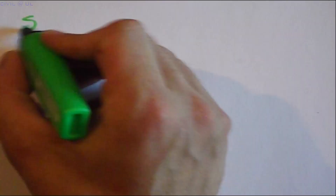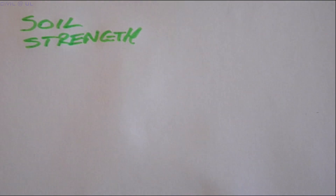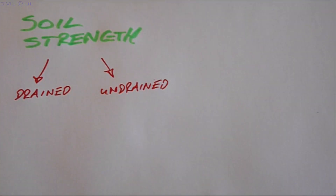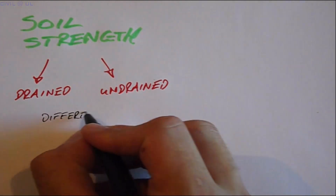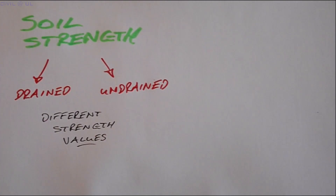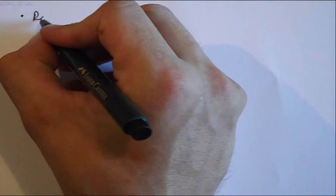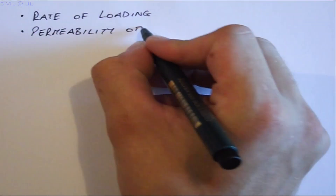One very important decision in design is the selection of soil strength — specifically whether the soil is behaving under drained or undrained loading conditions. This matters because each condition gives different strength values, and selecting the wrong strength could lead to disaster. Any soil can experience either condition depending on the rate of loading and the permeability of the soil.